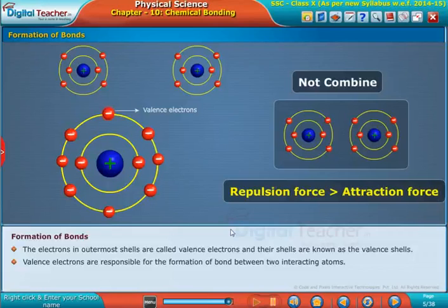After learning about the formation of chemical bonds, now let us learn about their representation through the concept of Lewis dot structures.